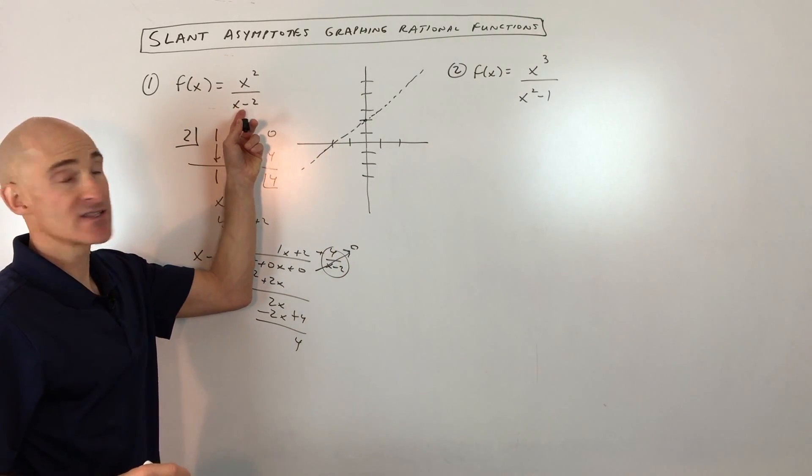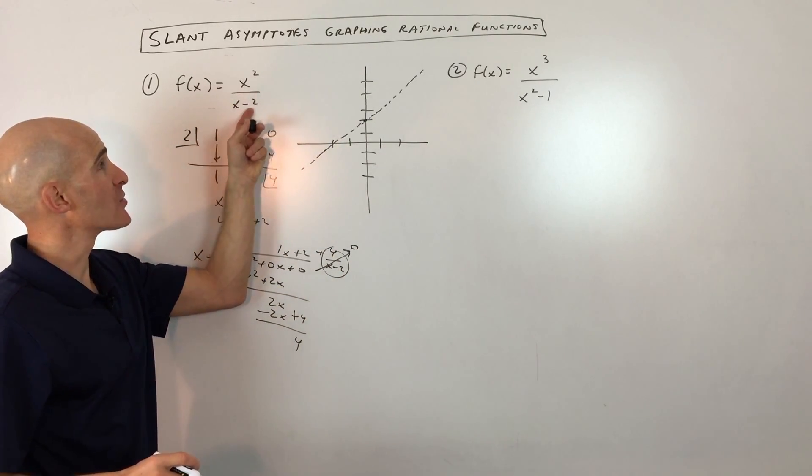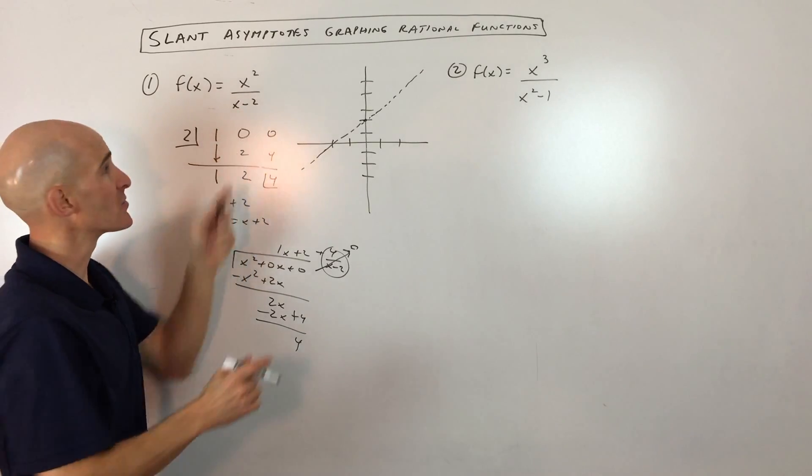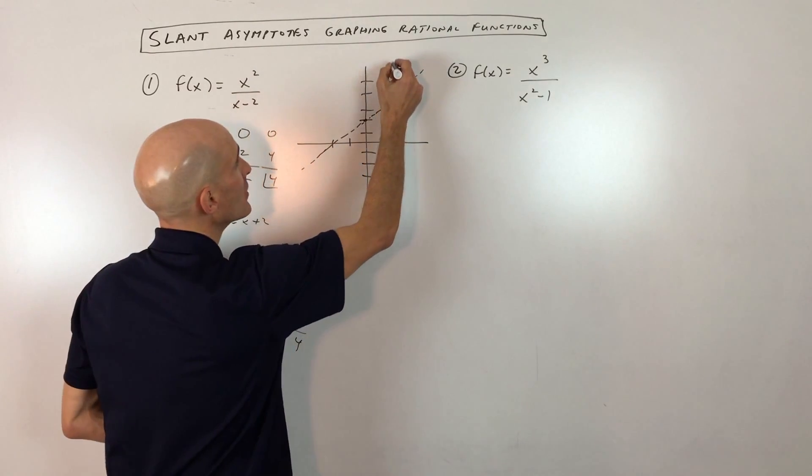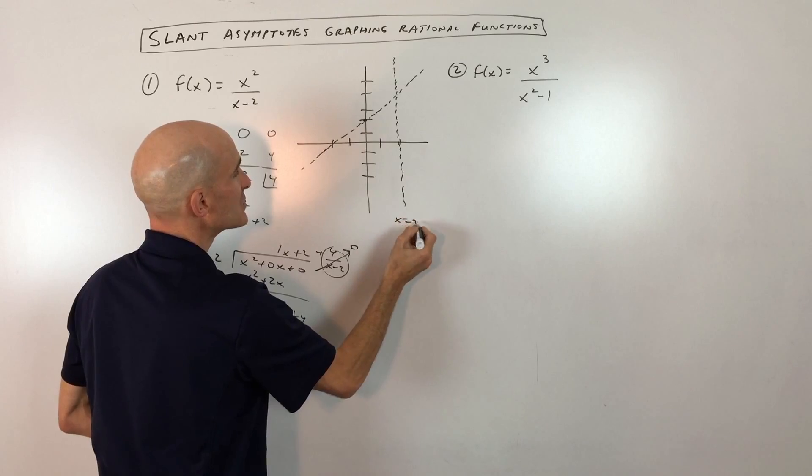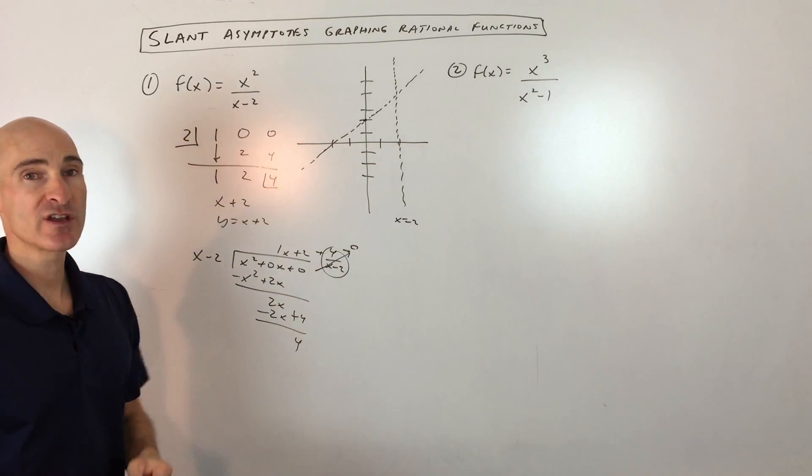The next thing we're going to look at is the denominator. We can't divide by 0, and you can see that we're going to have a vertical asymptote here at x equals 2 because we can't divide by 0, and 2 would make the denominator 0. So there's our vertical asymptote there at x equals 2. Our graph is starting to come together.